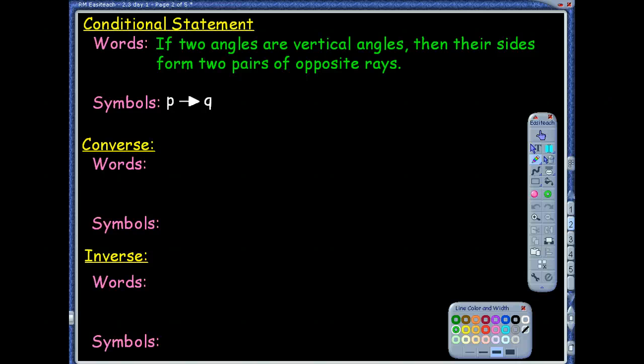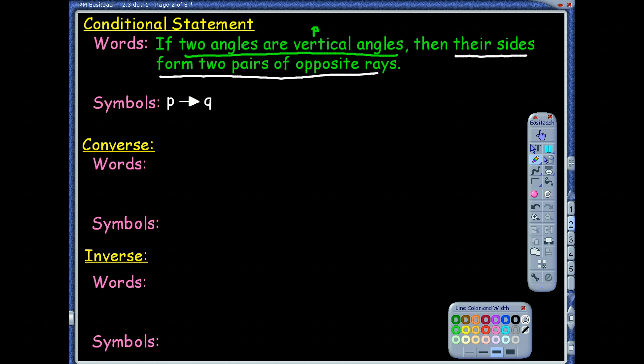Let's take a look at, I've got a conditional statement up here. It says, if two angles are vertical angles, then their sides form two pairs of opposite rays, which we've talked about before. That was the definition of vertical angles. What is the p part of this statement, and what is the q? What is the hypothesis, and what is the conclusion? The hypothesis in this one would be two angles are vertical angles. The conclusion, the q? Their sides form two pairs of opposite rays. So, again, symbolically, we would say p implies q. And that symbolically, p implies q, works for any conditional statement. What changes is just the hypothesis and conclusion for each.